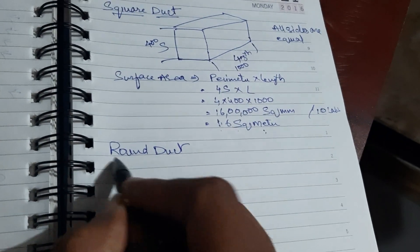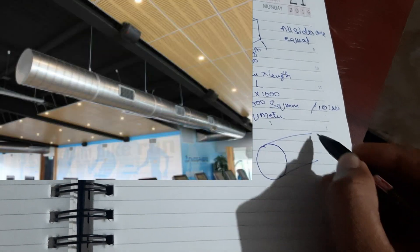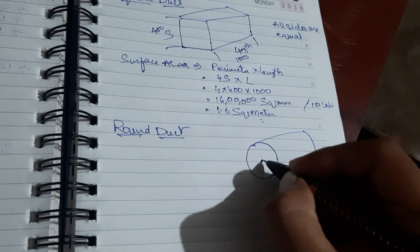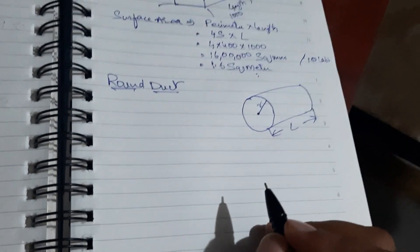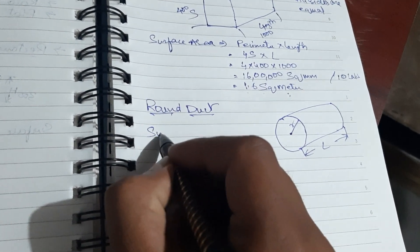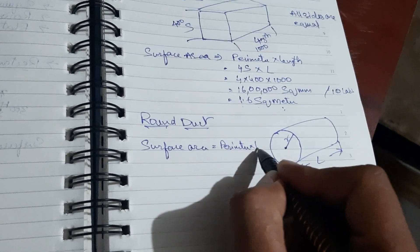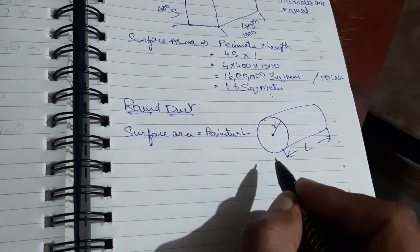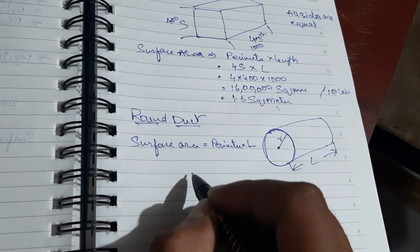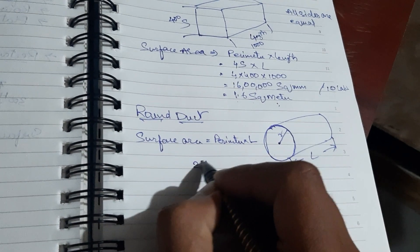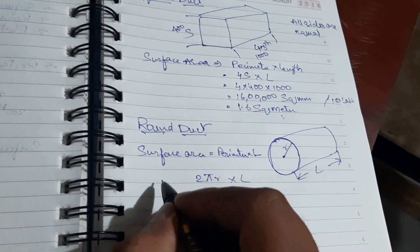Next is round duct. I will draw a diagram — you can see in the image. It is cylindrical in shape. It has a radius and a length. Surface area is equal to circumference into length — my mistake, I wrote perimeter but it is called circumference. The circumference of a circle is 2πr, so surface area = 2πr × length.